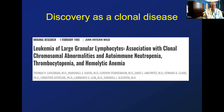It was almost 40 years ago that the first description of LGL leukemia as a clonal disorder was published. We established clonality based on cytogenetic clonality. In the first patients, we found neutropenia, thrombocytopenia, and hemolytic anemia, all appearing to be autoimmune in basis — and that's still a common theme of the illness 40 years later.